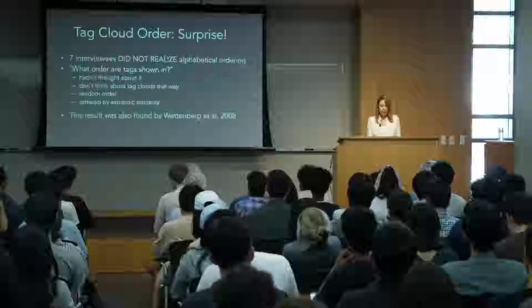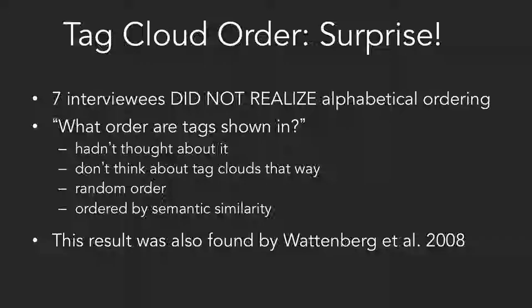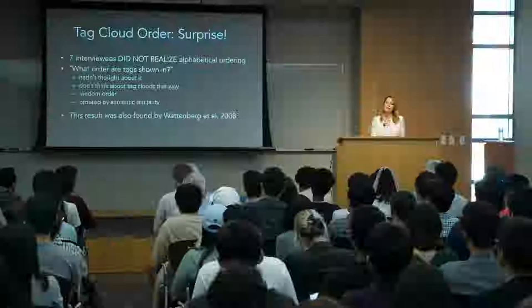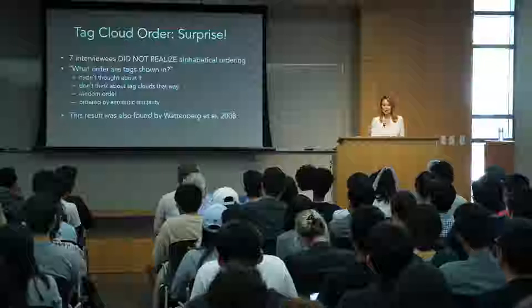There was a surprise: they didn't know what order the tag clouds were in. People did not know they were in alphabetical order. When I asked what order the tags were shown in, they'd say things like, 'That's not really relevant,' or 'I think they're in random order,' or 'They're ordered by semantic similarity.' A follow-up study also found people actually don't care about the order of tag clouds. On the other hand, people said they're used for navigation — alphabetical order is useful when they intellectualize it.